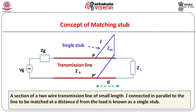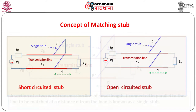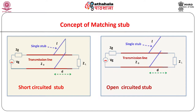What is meant by a stub? A section of a transmission line having small length is called a stub. Two types namely single stub and double stub comprising of one or two stubs are in common use. A section of a two-wire transmission line of small length L connected in parallel to the line to be matched at a distance D from the load is known as a single shunt stub. The stub may or may not have its characteristic impedance the same as that of the given transmission line, but generally the stub is chosen to have the same characteristic impedance as the given transmission line.